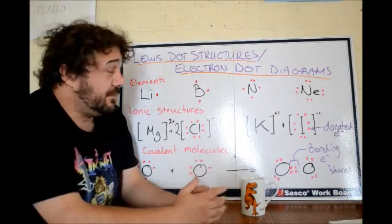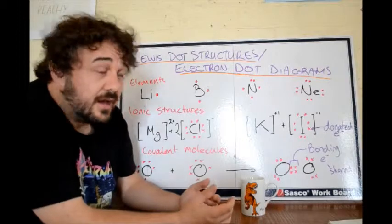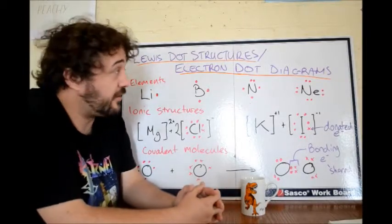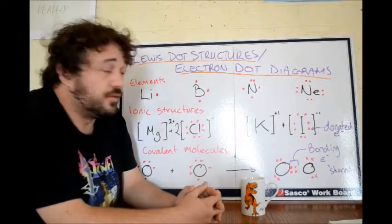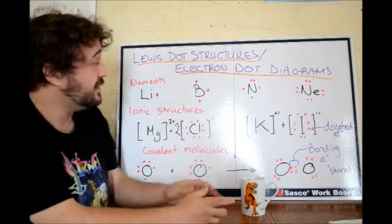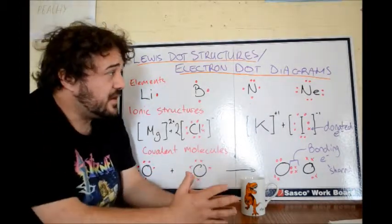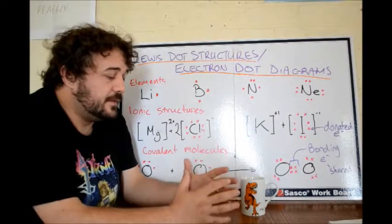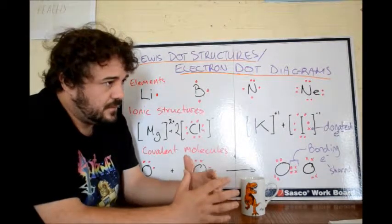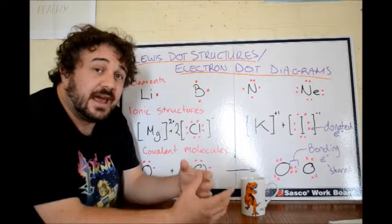Lewis dot structures, that's the name I prefer, or electron dot diagrams, which is a very simple, explains exactly what they are. What they do, is they show for us the valence electrons in the outer shell.